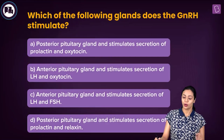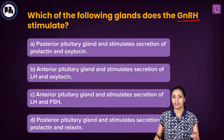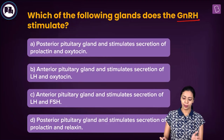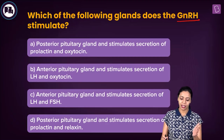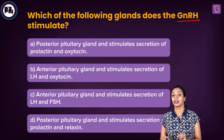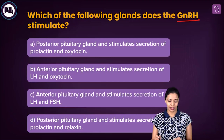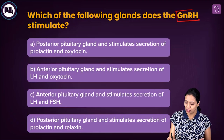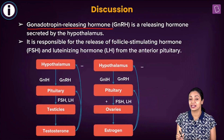Here's the question: Which of the following glands does GnRH stimulate? The options are: posterior pituitary gland, stimulates secretion of prolactin and oxytocin; anterior pituitary gland, stimulates secretion of LH and oxytocin; anterior pituitary gland, stimulates secretion of LH and FSH; posterior pituitary gland, stimulates secretion of prolactin and relaxin. This question is about GnRH — gonadotropin releasing hormone.